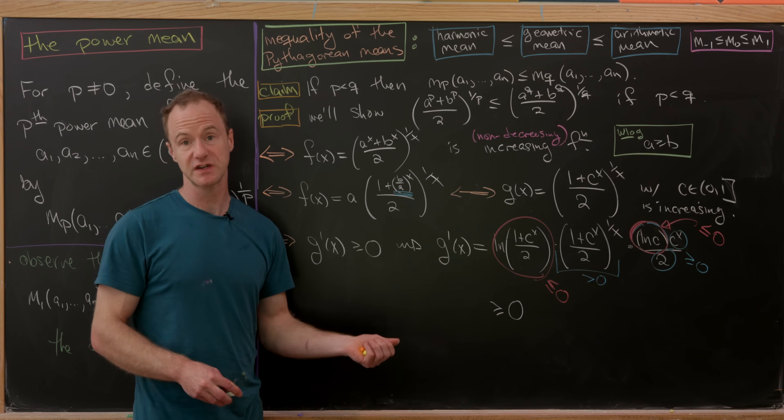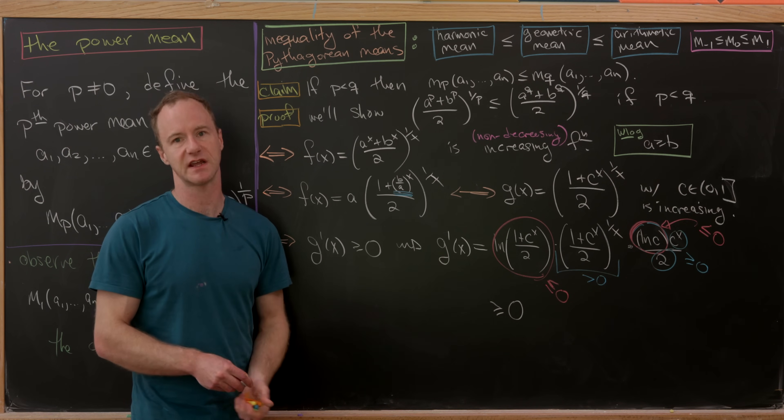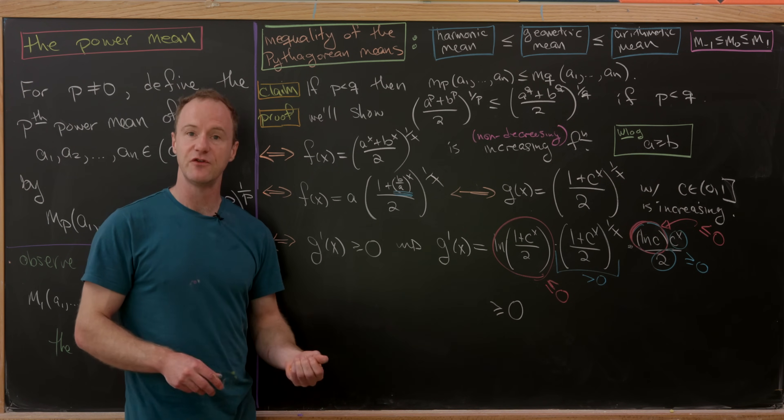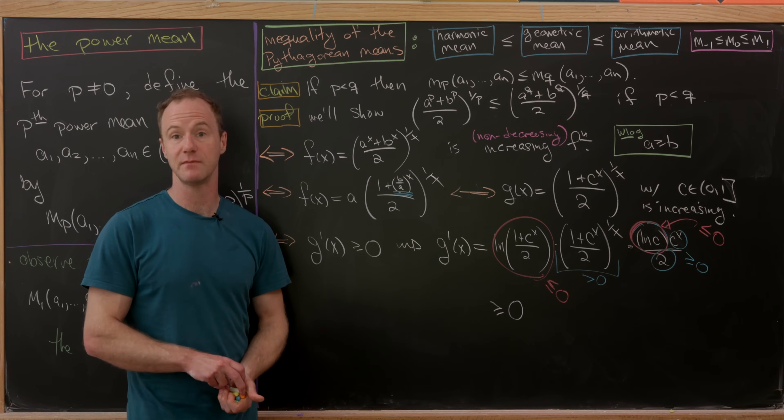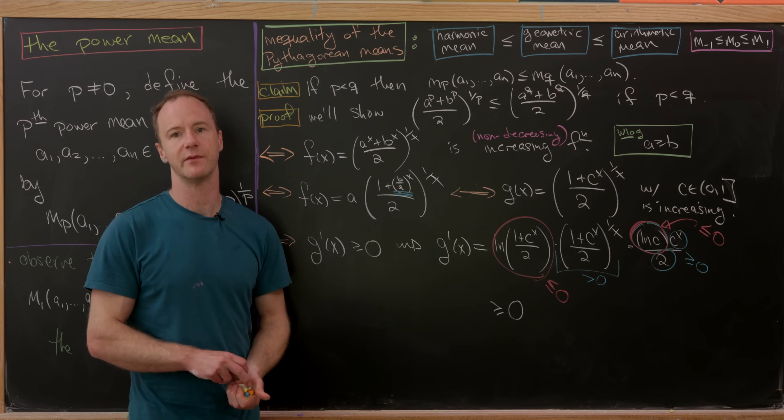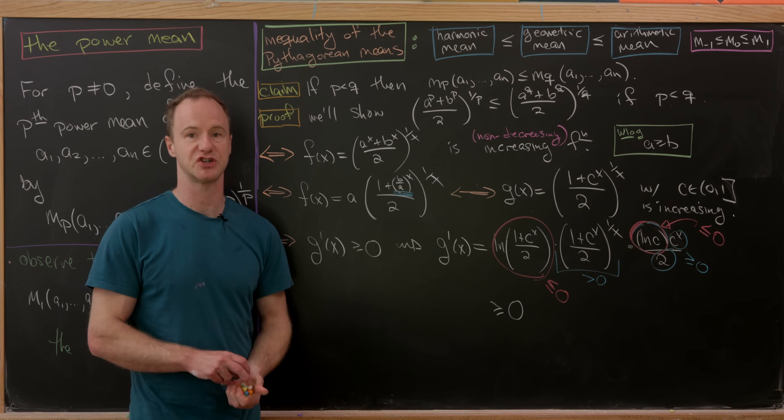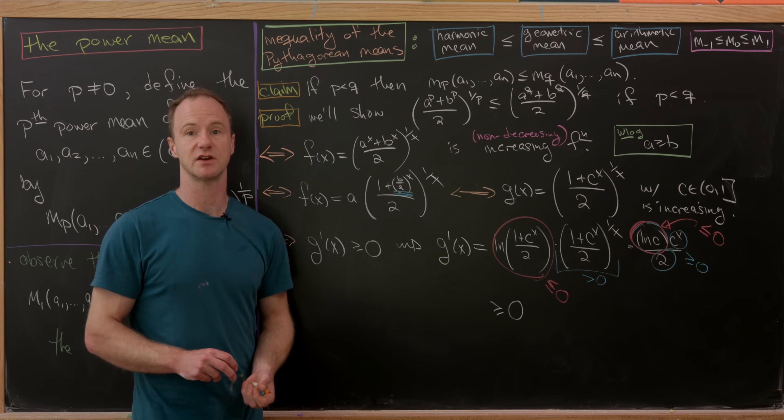Since g non-decreasing implies f non-decreasing, which implies the power mean inequality holds in the n=2 case, we've proved our result. If p < q then m_p ≤ m_q. Thanks for sticking around, and if you haven't subscribed yet, please consider subscribing — it would really help the channel.